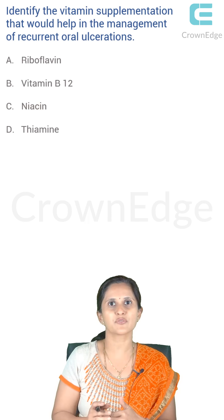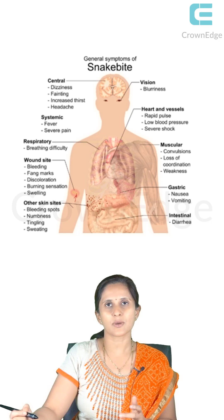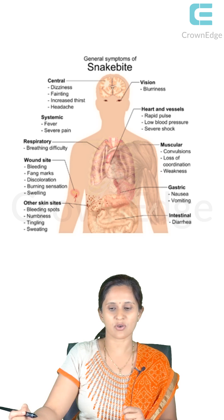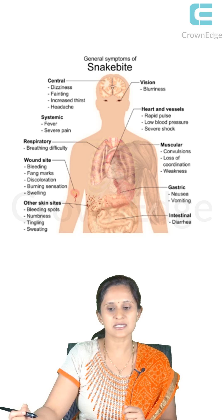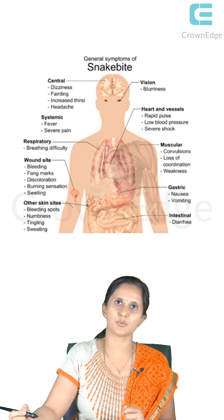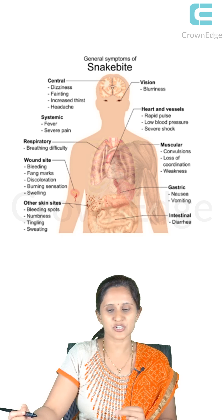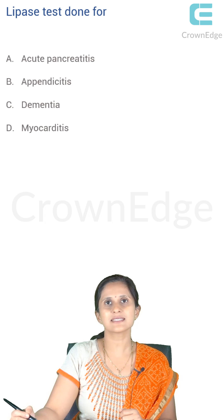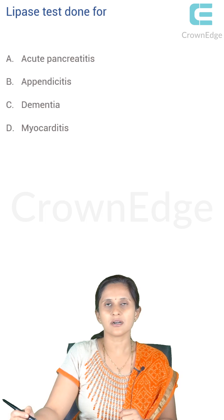In a snake bite, neurotoxins are released, which cause neurological disorders in the eye such as ocular muscle paralysis, ptosis, and diplopia — diplopia being double vision. Ptosis happens because of paralysis of the muscles which elevate the eyelids. Lipase test is done basically for acute pancreatitis — if you need to detect a problem with the pancreas, we use the lipase test.